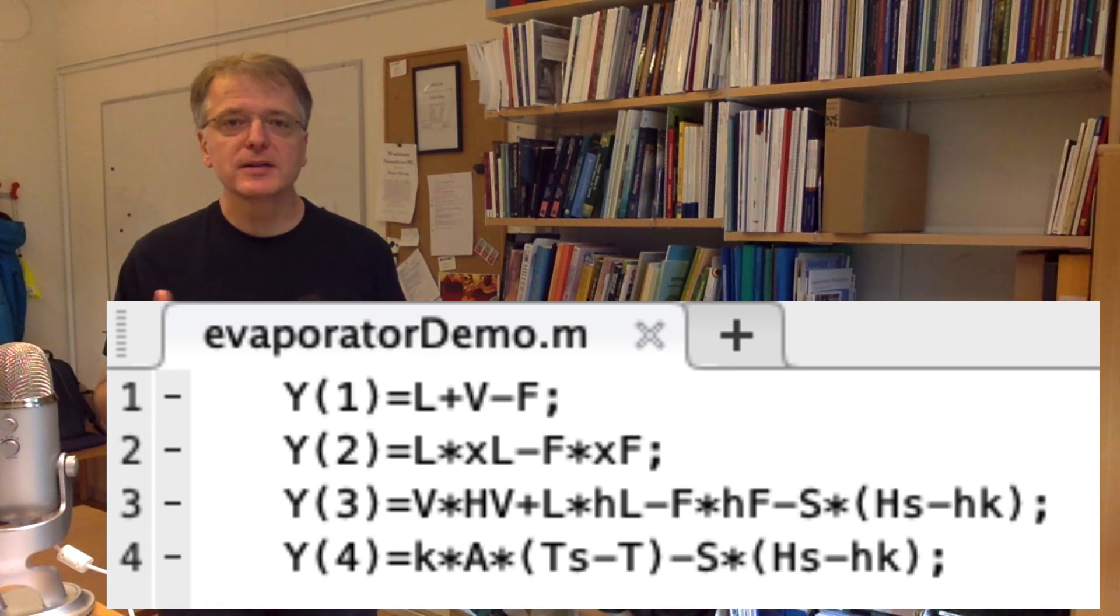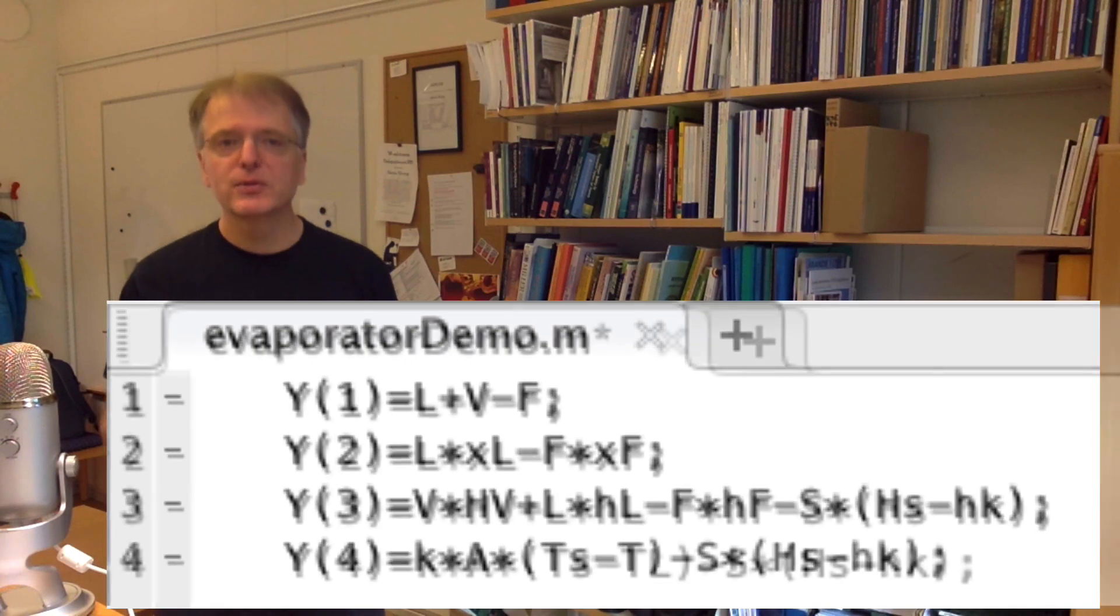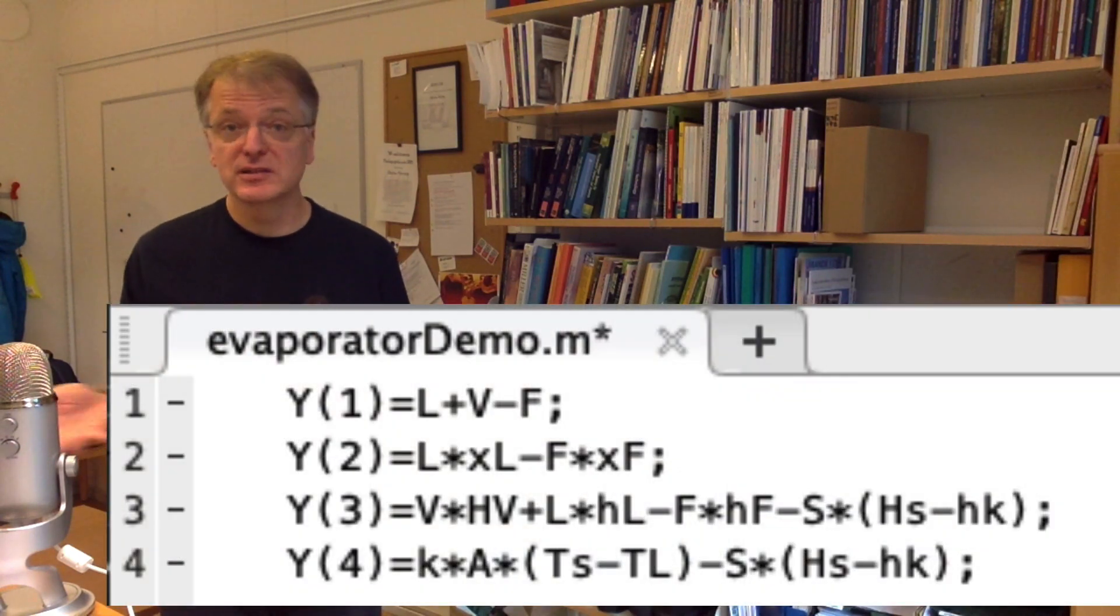And in my mind the variable name T is a bit unspecific, so let's rename it to TL, the temperature of the liquid L, which by the way is the same temperature as the temperature of the vapor flow V.